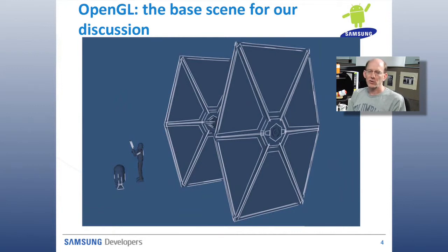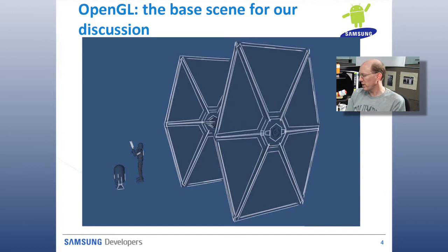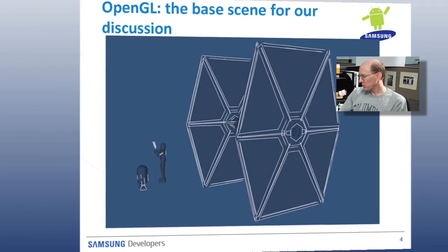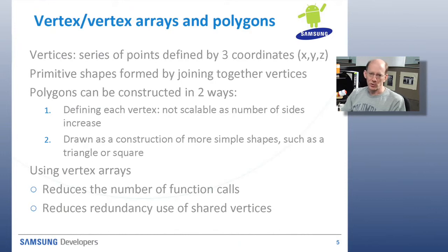So to start with, we want to show our base scene that we're going to be using for our discussion here. Let's imagine that we're going to build a space game or something. So here we have a spaceship, maybe a little robot — our favorite little robot — and an army guy running around with whatever it is he's holding. So how are we going to start taking this scene and actually going from that to rendering it? The first thing we'll talk about are vertices and vertex arrays and polygons, and how you describe a polygon.